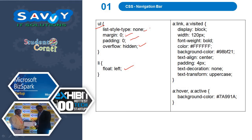For the anchor link and visited state — whenever we are clicking on the link or when the link is visited — the display is block, width is 120px, font-weight is bold, color is white, background-color is set, text-align is center, padding is given, and text-decoration is none.